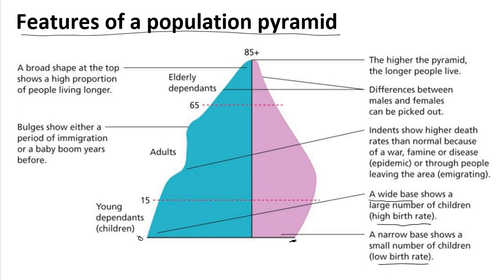Between the ages of 16 to 65 is the economically active population. When it bulges, it shows either a period of immigration where a lot of people come into the country, or a period of baby booms years before. An indent around the economically active population shows a higher death rate than normal due to things like war, famine, disease, epidemic, or emigration. At the top, where you have the elderly from 65 years and above, a broad shape indicates people are living longer, showing high life expectancy.